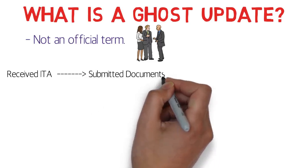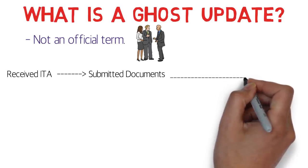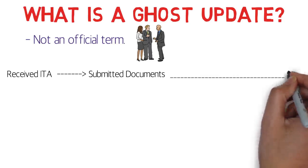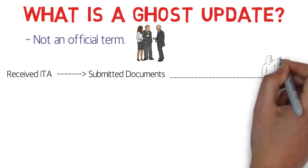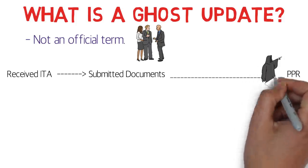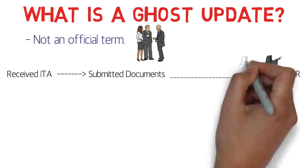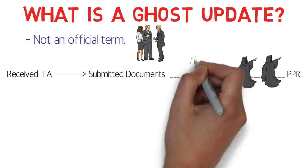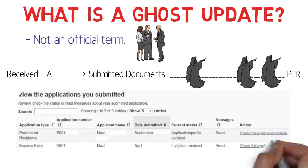Once you receive the ITA, you'll have to submit your documents — you're given a couple of months — and then there will be a long waiting period until you get your PPR or the 'golden mail.' You'll actually get the ghost update somewhere between this time period. There might be one ghost update or there might be a couple of ghost updates.